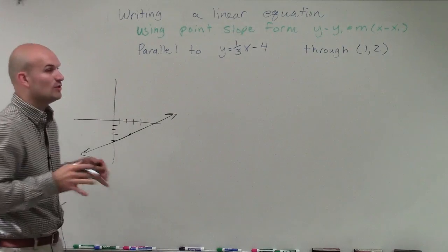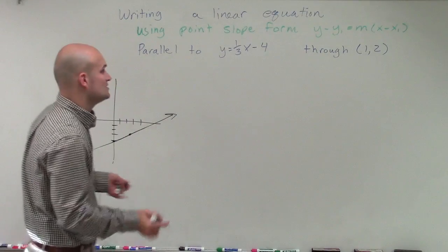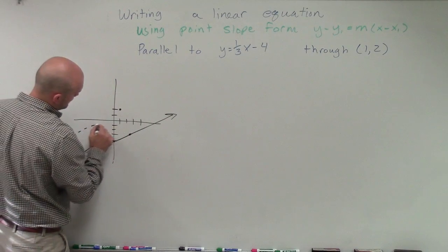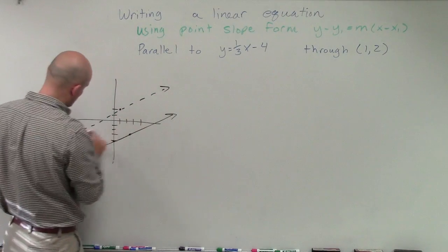And what I want to do is I want to find an equation that's parallel to it, that's not going to intersect, that goes to the point 1, 2. So I need to find a graph that's going to look something like that.